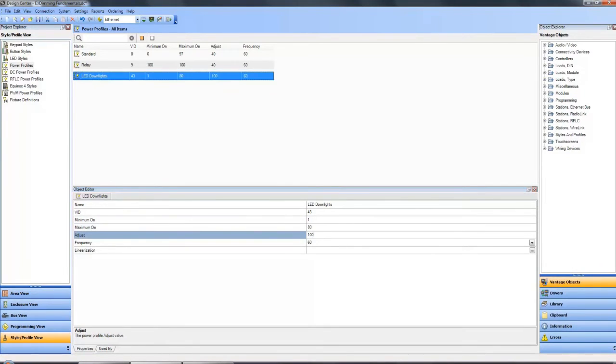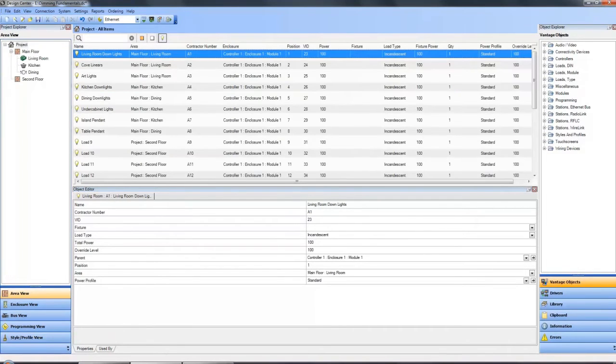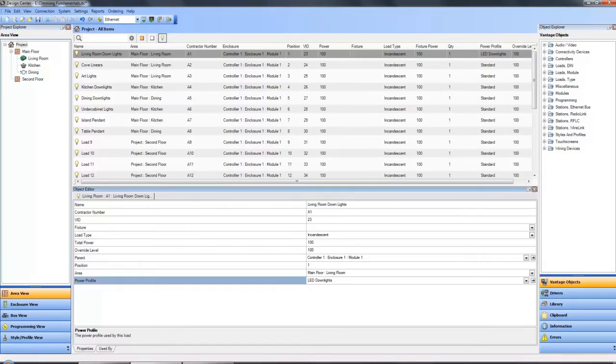Step three, within either the area view or the enclosure view, we'll identify each load comprised of this fixture type and apply the appropriate power profile.